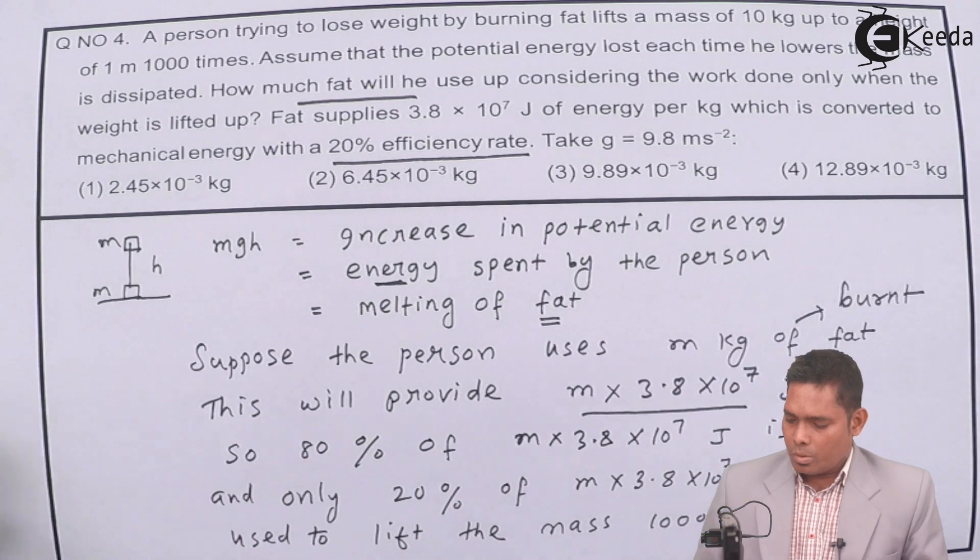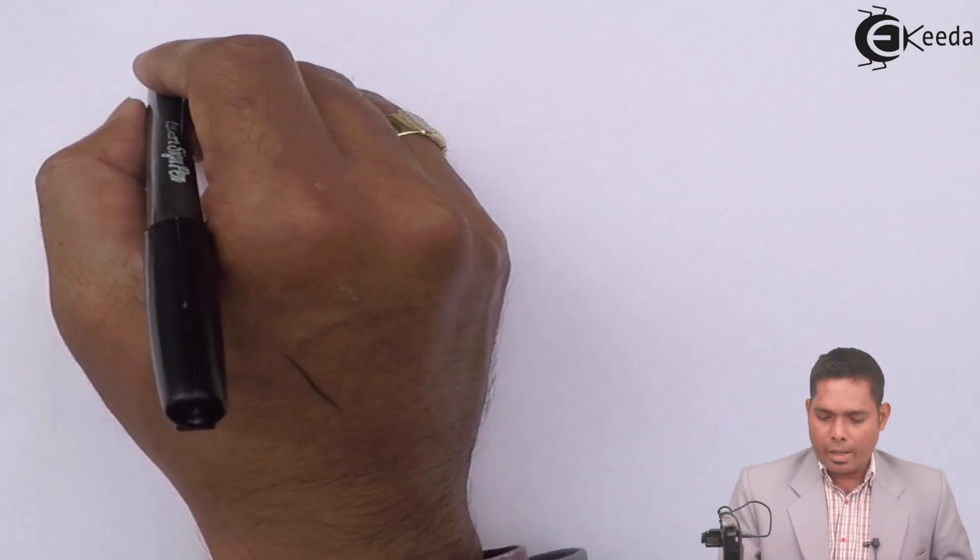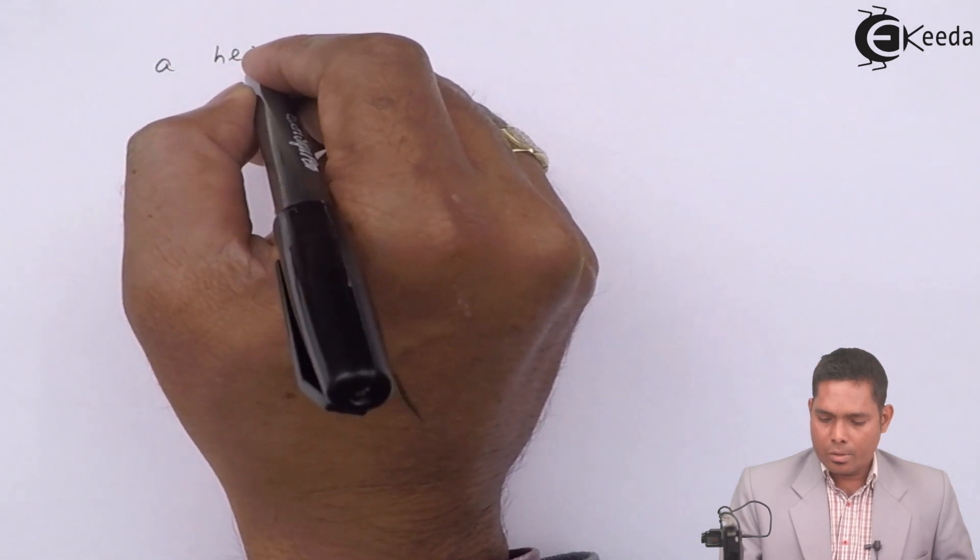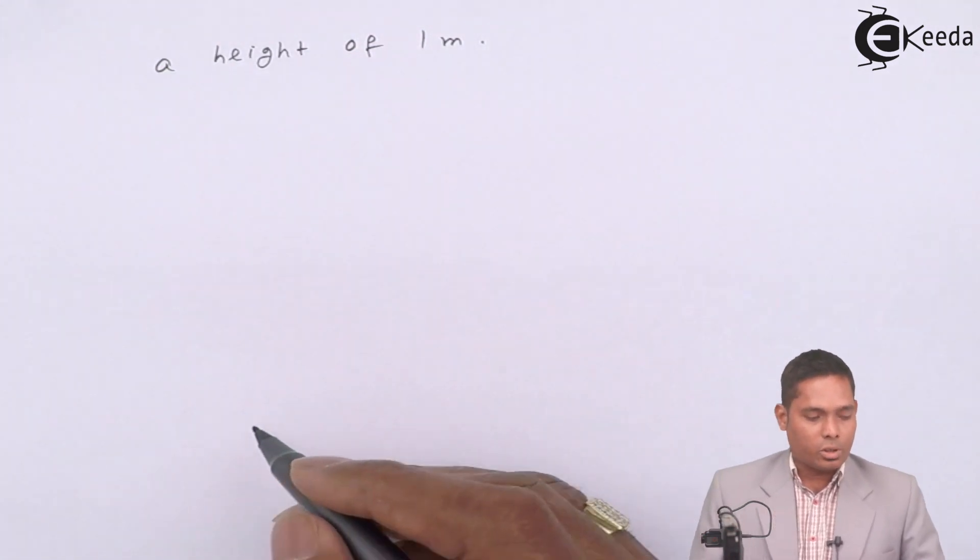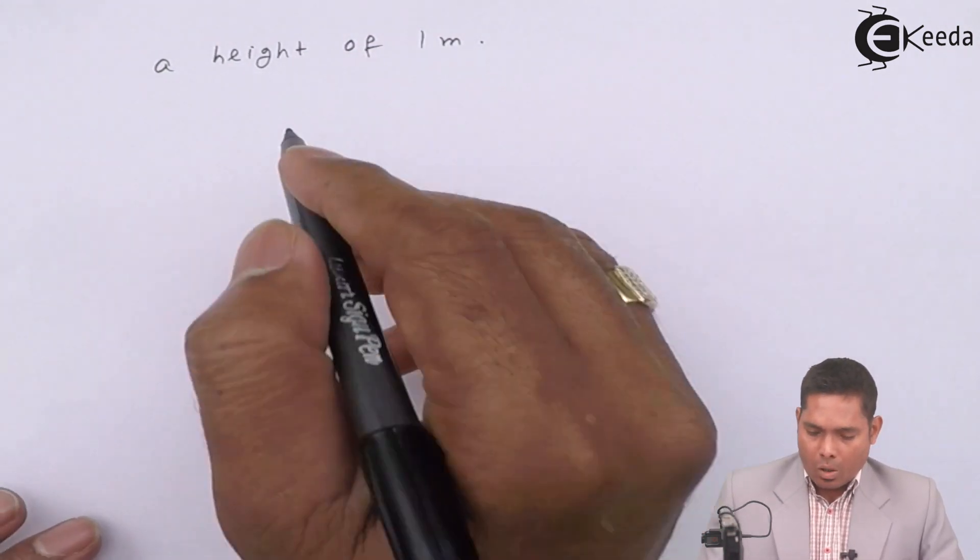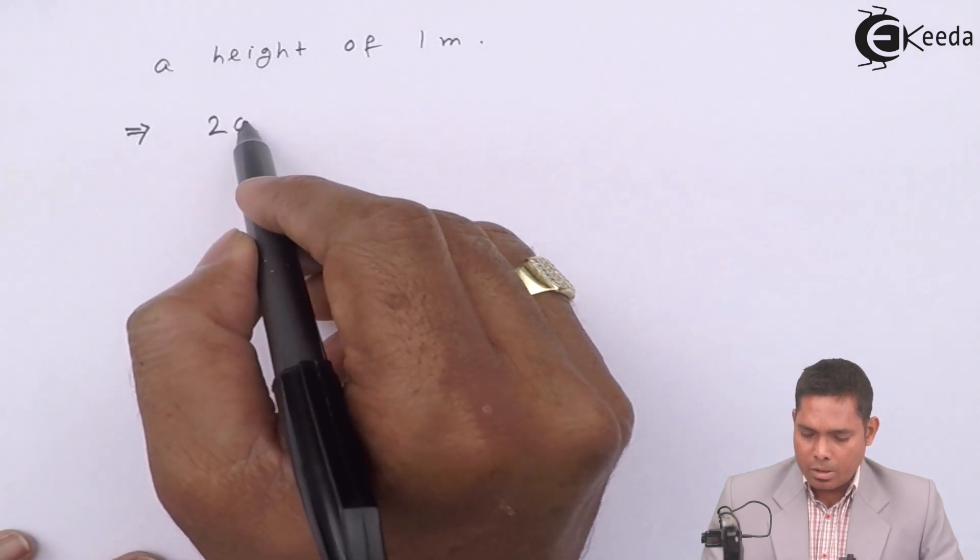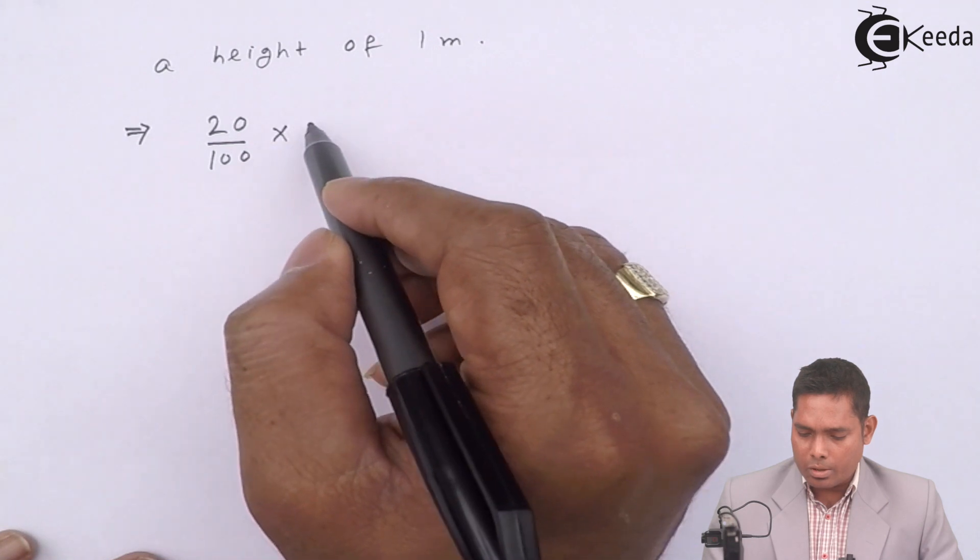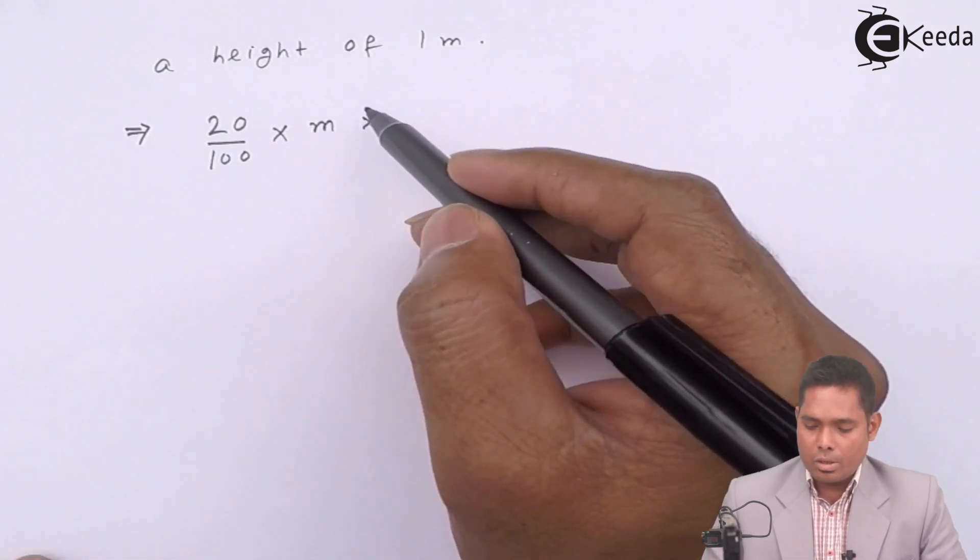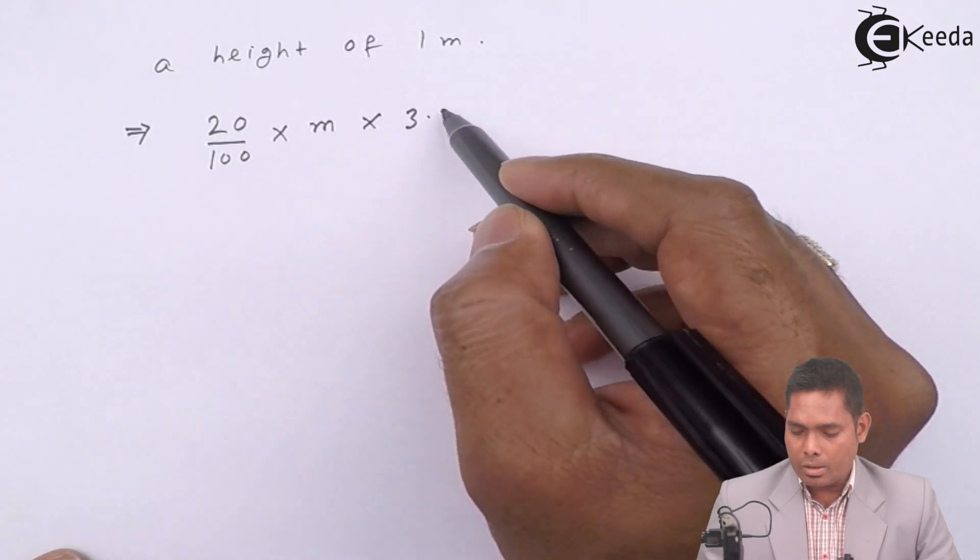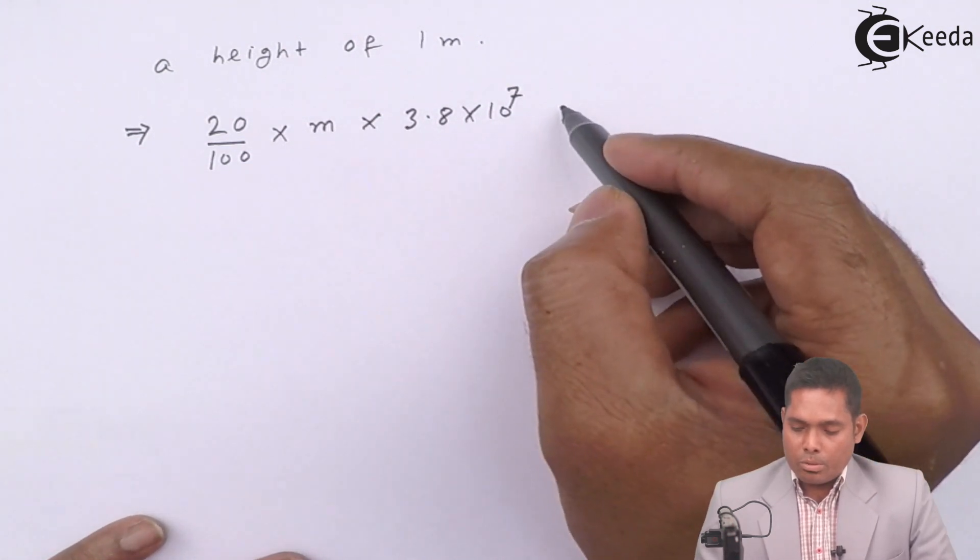To a height of 1 meter as in the question. That means this implies that 20 percent, that means 20 divided by 100, of the total energy of burning of fat, m into 3.8×10⁷, is used.